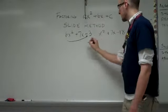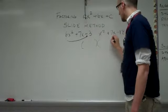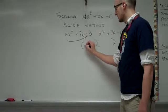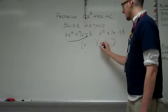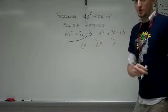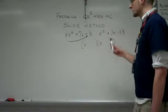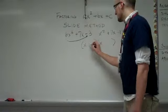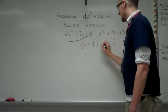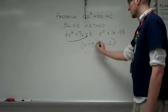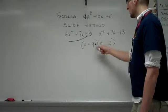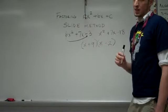Then factor it. We have x squared, so that must mean that's an x and that's an x. And now we're thinking of factors of negative 18 that add up to 7. That would be a positive 9 and a negative 2, because 9 times negative 2 is negative 18, and 9 plus negative 2 is 7.